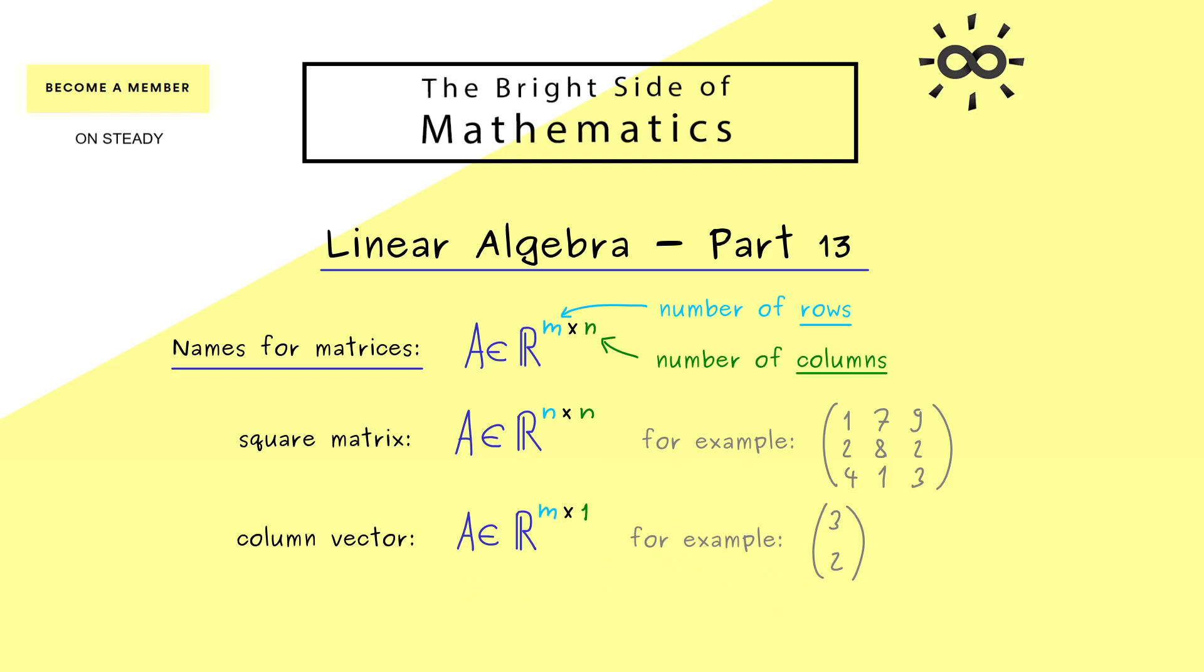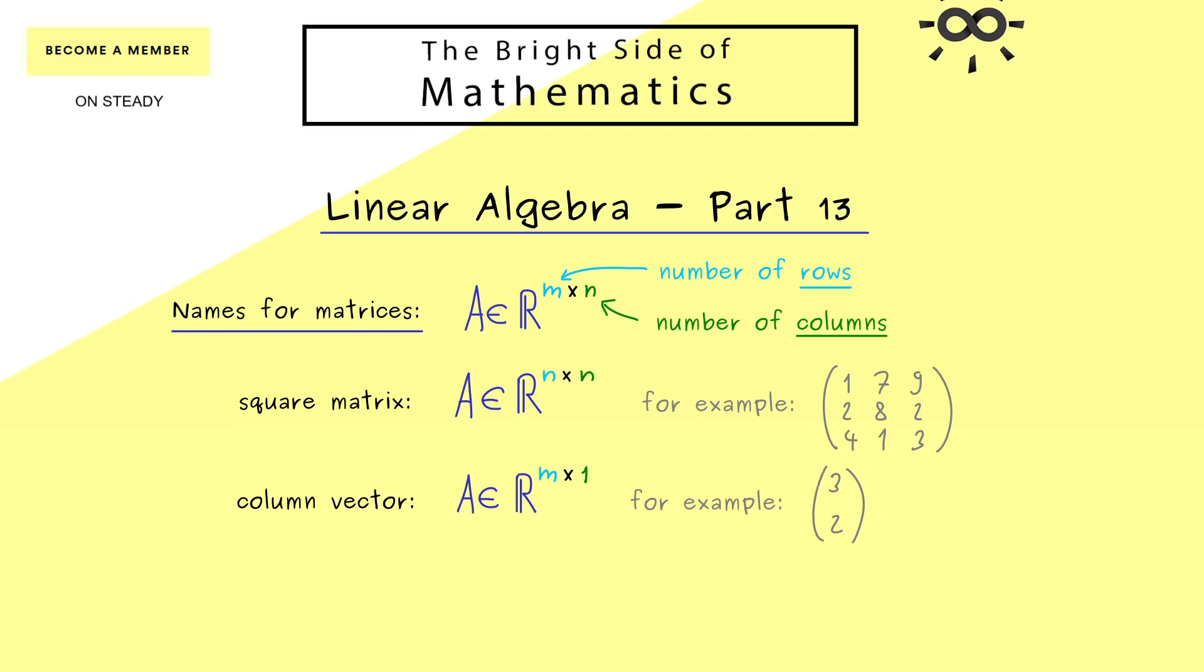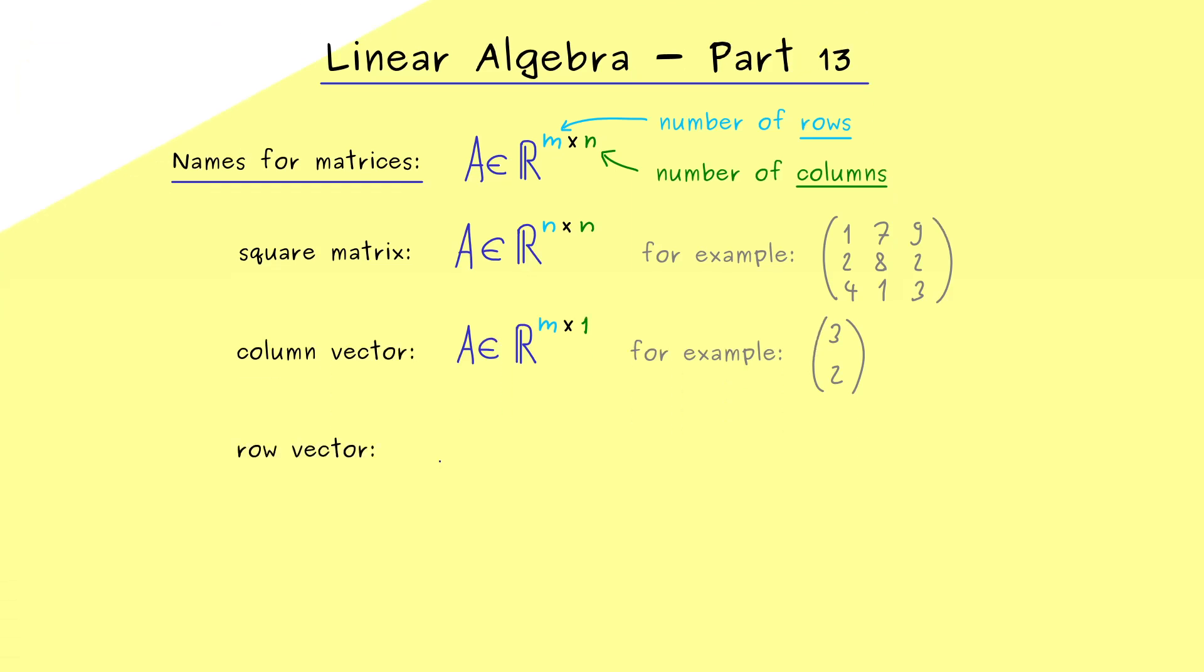Ok now if we have a column vector you might already guess that we also need a row vector. This means this should be a matrix where the height is just 1. However still the number of columns can be any natural number n.